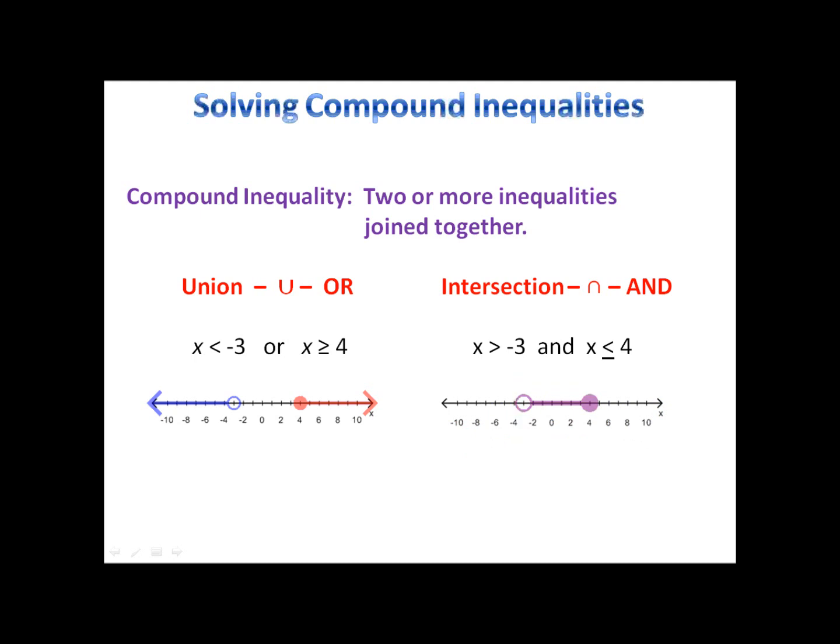Remember, when we have an intersection, we can write it using a single statement. In this case, negative 3 is less than x, which is less than or equal to 4. Whenever you see anything written in this fashion, we know it's an intersection.